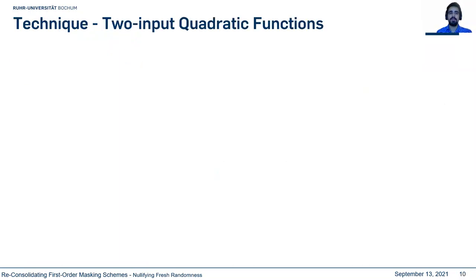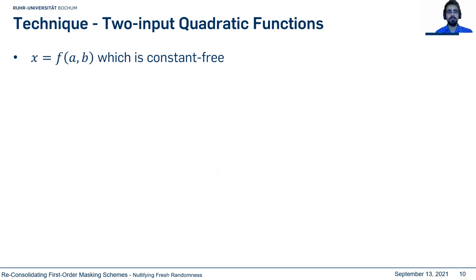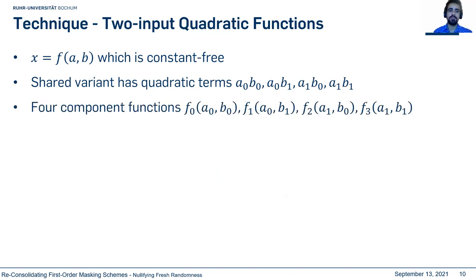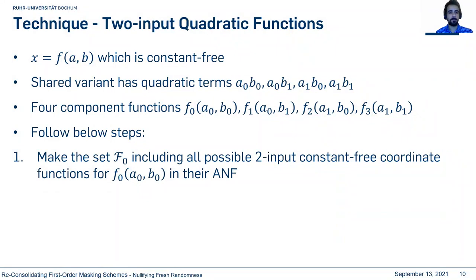We generalize this result. For an arbitrary two-input quadratic function, we always have the term A̅B, and the shared variant has four quadratic terms. Due to non-completeness, we need at least four component functions. We construct the set F0 including all possible two-input cubic coordinate functions for F0.